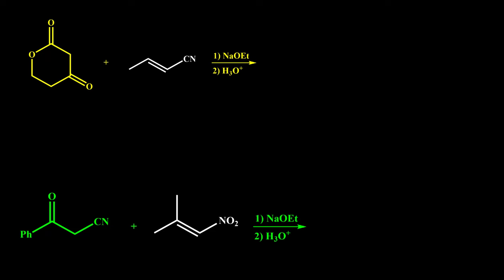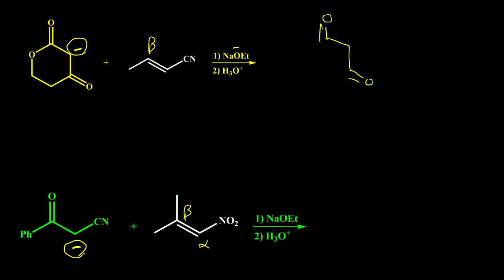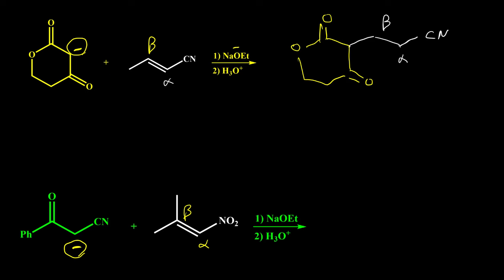Here are two more examples. Under basic conditions this carbon becomes negative. In the second example this carbon also gets negative. The negative charge is between a carbonyl and a cyanide group, so it can make resonance with both — it is stable and can perform Michael reaction. This carbon attaches to the beta position. For the first product: the new carbon attaches to the beta carbon, beta attaches to alpha, then the cyanide group; on the beta position we also have a methyl group.